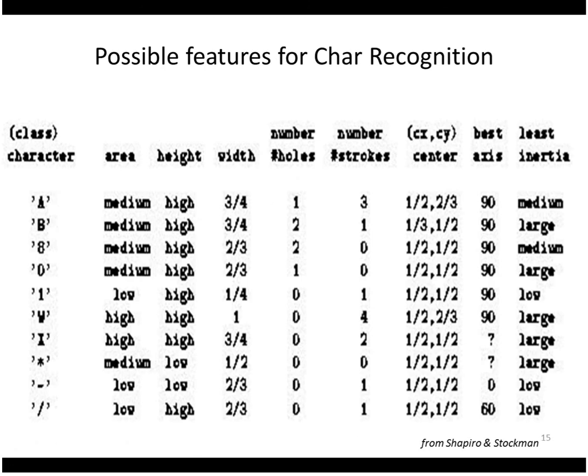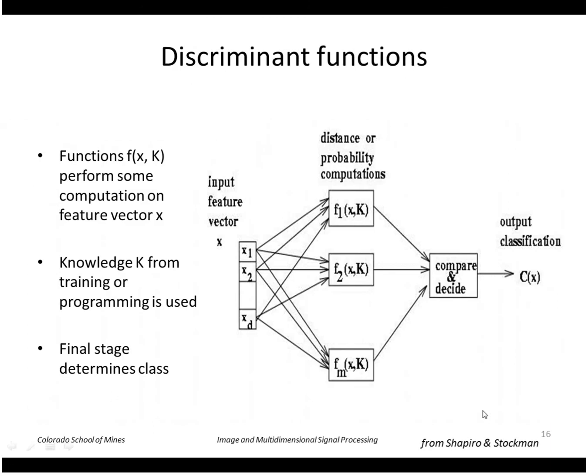So here are possible features for recognition: area that has been classified roughly into three categories low, medium, high; height; width; number of holes; number of strokes; the center again discretized roughly; and the axis, etc. So what we want now is a function to look at our feature vector and produce a class number using some probability computation. And we may have several classified discriminant functions of this type and then we can combine those to come up with our final classification.